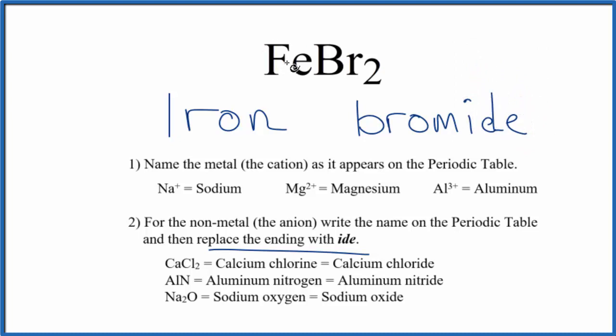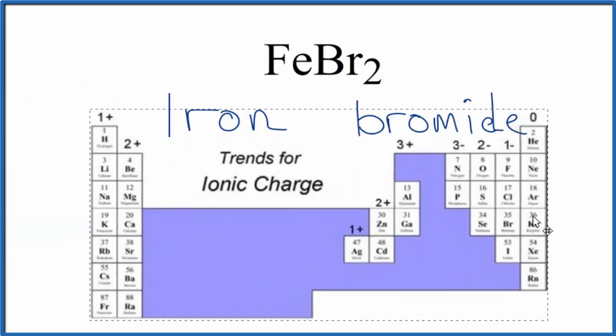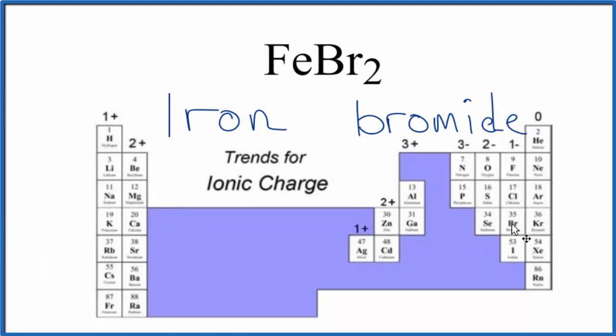Since iron is a transition metal, we really don't know the charge. We have to look at what it's bonded to. Here it's bonded to two bromine atoms. When we look at the periodic table, we can see bromine right here is in group 17, sometimes called 7A, the halogens. It'll have a one minus ionic charge.